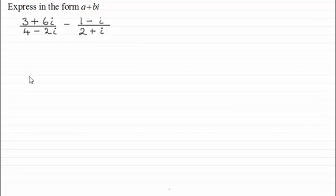Hi there. Now for this question we've got to express in the form a plus bi: 3 plus 6i divided by 4 minus 2i, minus 1 minus i all divided by 2 plus i.